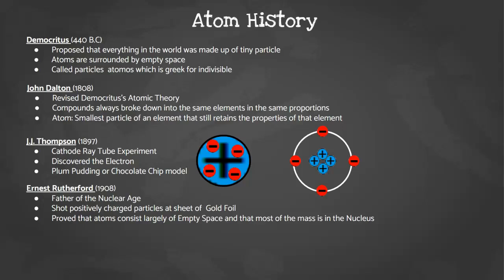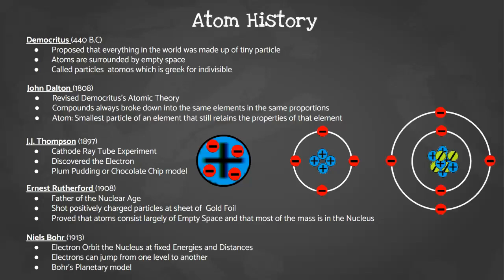In 1908, Ernest Rutherford added to the model. He's considered the father of the nuclear age because he discovered our nucleus. He shot positively charged particles at sheets of gold foil, and through that gold foil experiment, he proved that atoms consisted largely of empty space and that most of the mass is in that positively charged nucleus. Now we have Niels Bohr in 1913, and he determined that electrons orbit the nucleus at fixed energies and distances. He also discovered that electrons can jump from one level to another, and that's what we have today, the Bohr model.